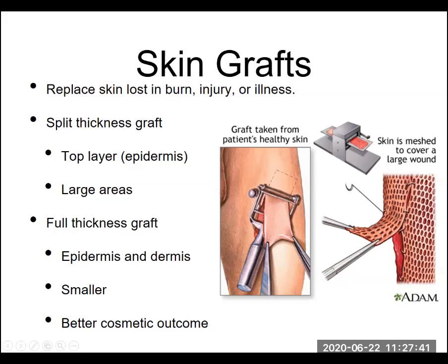What we're looking at is either the top layer in very large areas like burn patients, or for damage to the face, a slightly thicker graft that's much smaller but has much better survival. We're basically replacing the burned, injured, or diseased skin tissue with healthy tissue from another area or another individual, trying to repair that damaged region.